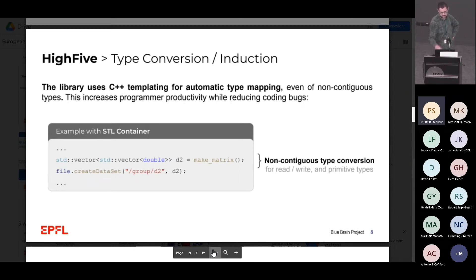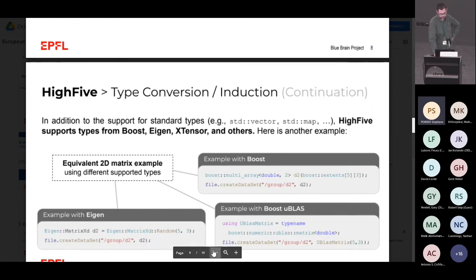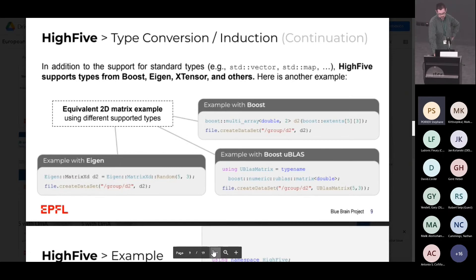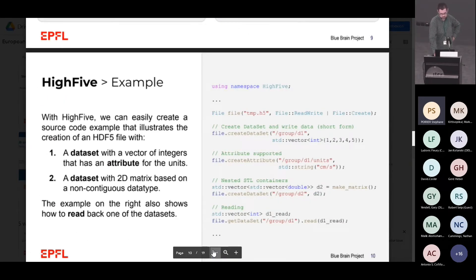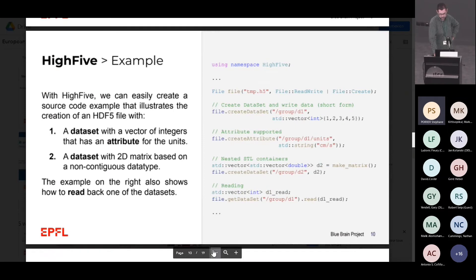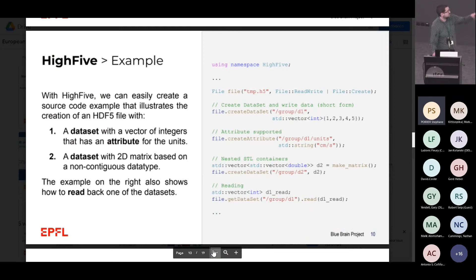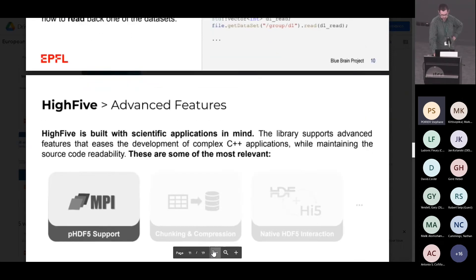In this small example it puts the matrix inside the HDF5 file. We support a lot of types. Some examples: create a dataset, create an attribute. Everything is symmetric — to read is the same as to write. You give the type you want at the last line — vector, matrix — and it reads from inside the file. It's really nice.